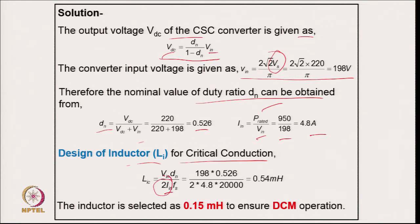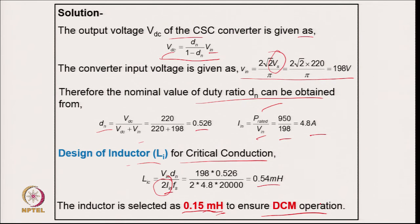To ensure discontinuous mode under all operating conditions, including at voltages well below nominal, the inductor is selected much lower than the critical value — approximately one-fourth — giving 0.15 mH. This ensures the converter operates always in discontinuous conduction mode under a wide range of supply voltage and load.